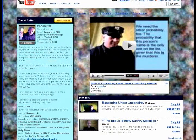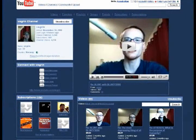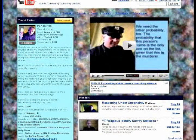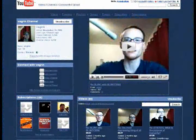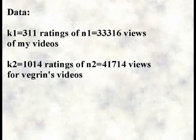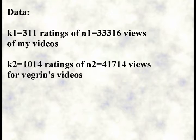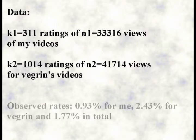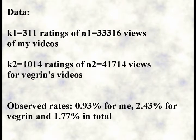Does it look like my viewers are more prone to rate my videos than his viewers are, or vice versa? Based on the number of ratings on the totality of his videos and mine, as well as the totality of views, I can now analyse this. The data was as follows: I had 311 ratings (k1) distributed on 33,316 views (n1). Vegrin had k2 equal to 1,014 ratings distributed on n2 equal to 41,714 views. The observed rates are 0.93% for me, 2.43% for Vegrin, and 1.77% in total. Doesn't look too good for model 1, does it?